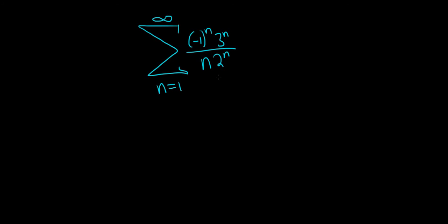In this problem, we have an infinite series, and we have to determine if it converges or diverges. So it looks like there's exponential functions, there's a negative 1 to the n, there's an n. Let's try to use the ratio test.